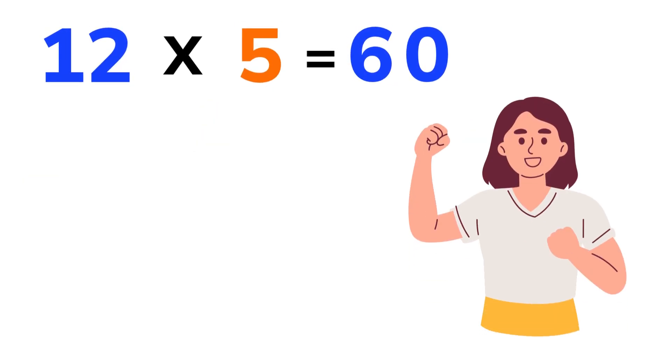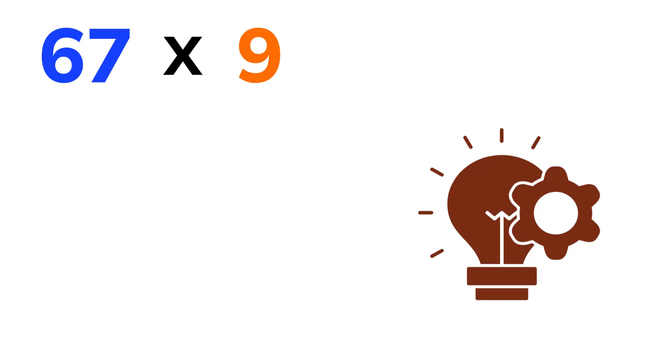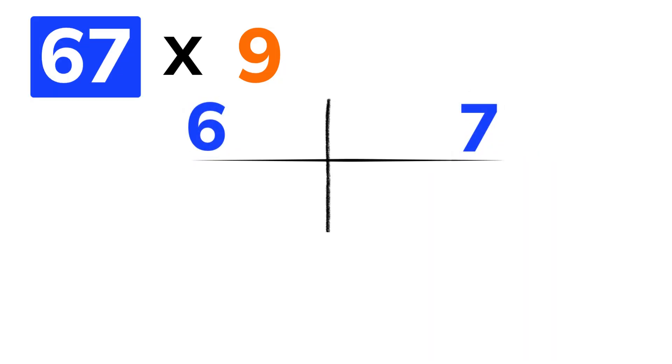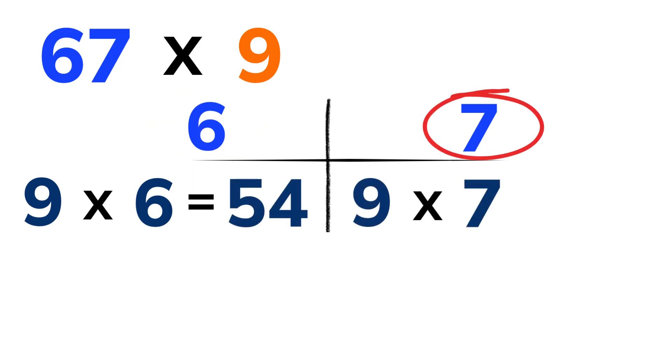Easy, right? That was smoother than a buttered slide. Next, try another one. 67 times 9. We'll apply the same method. Write 6 and 7 as separate digits like this.